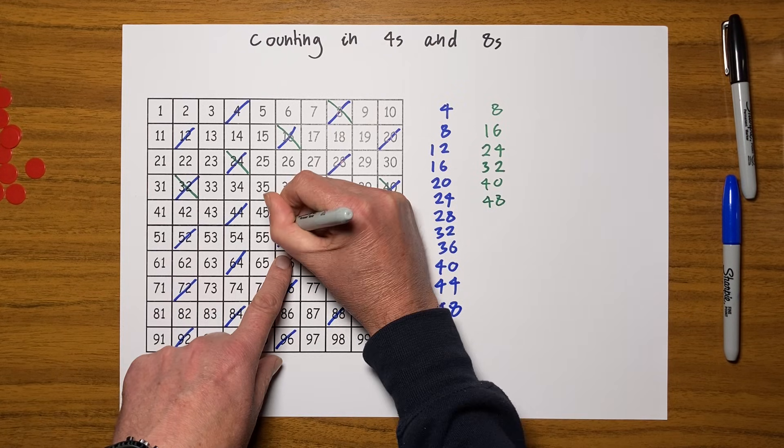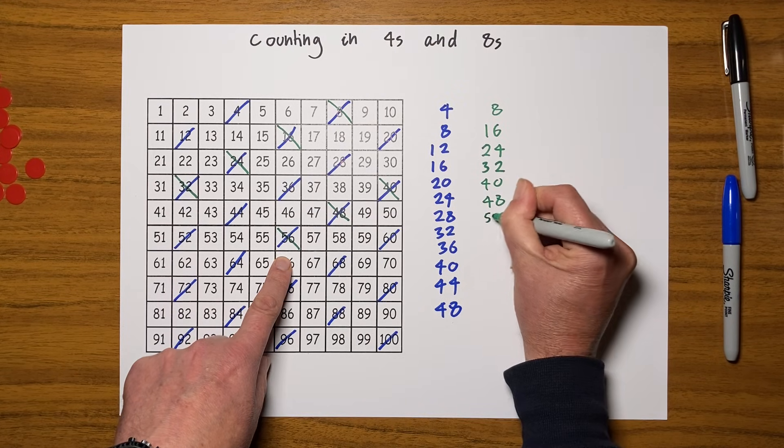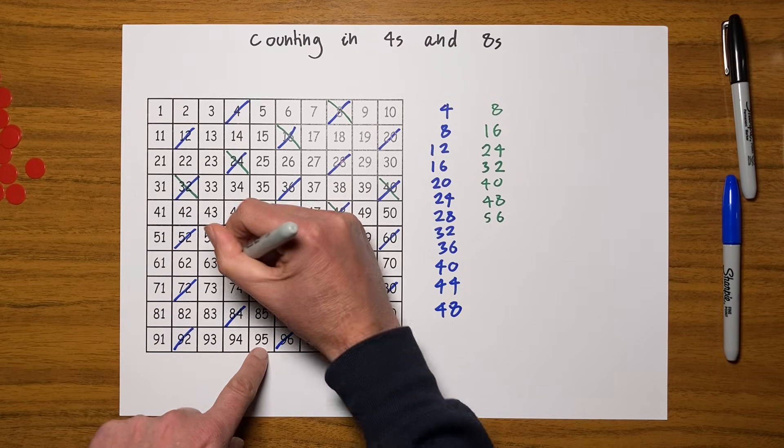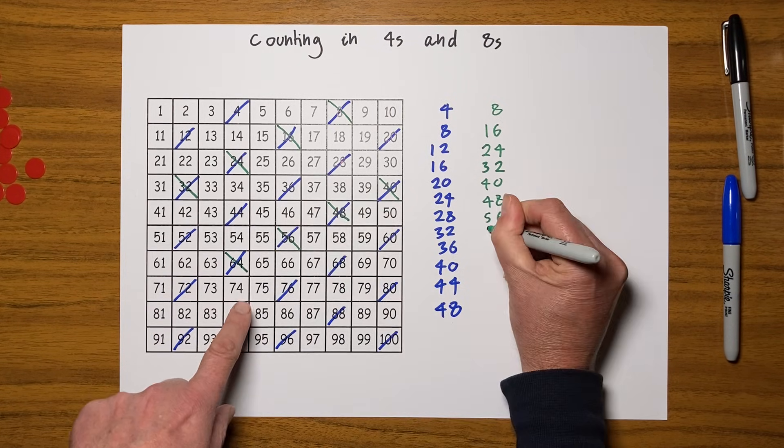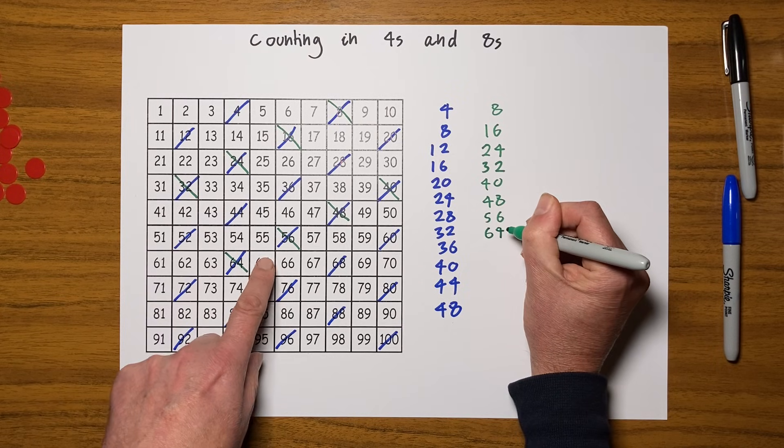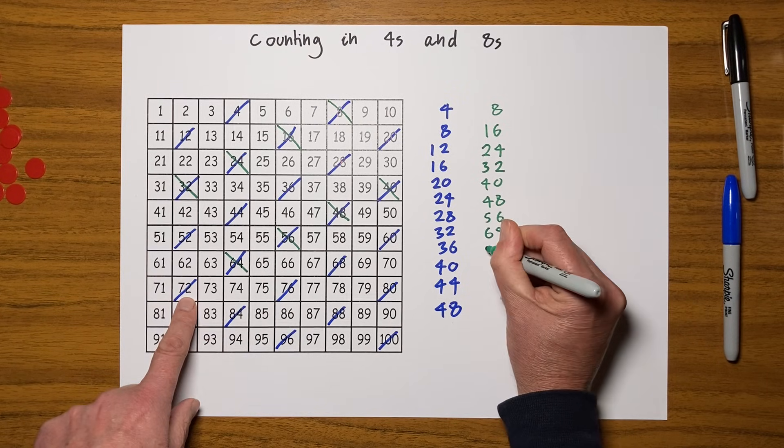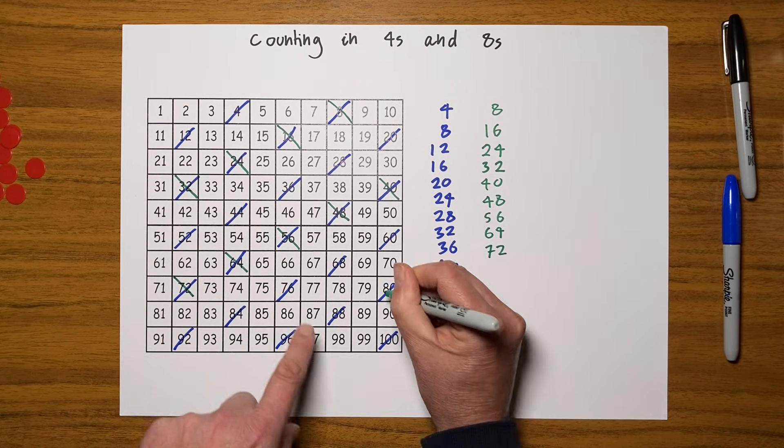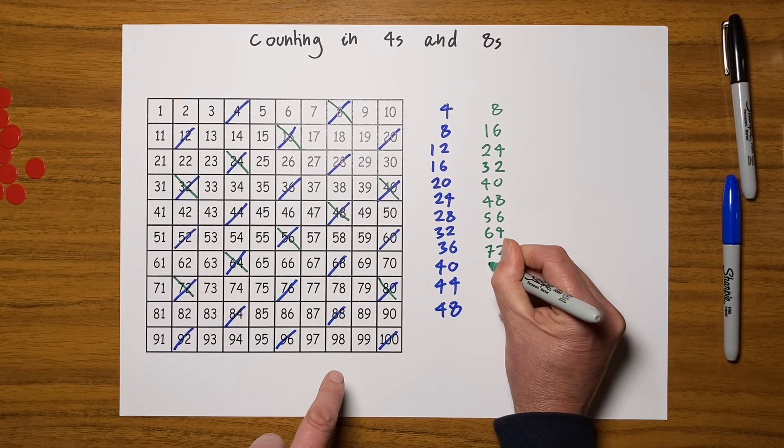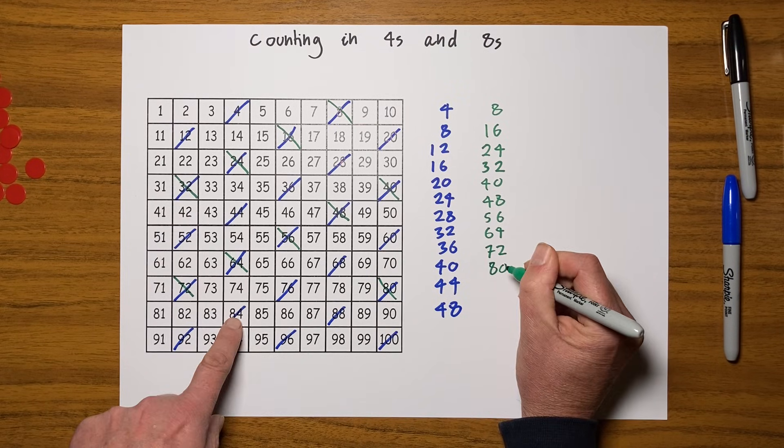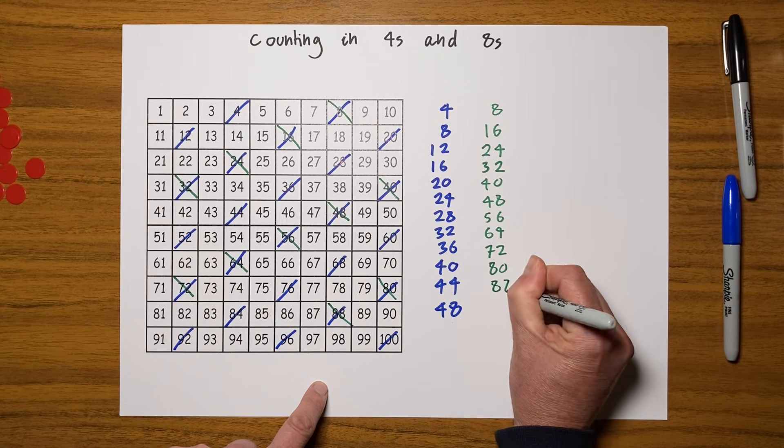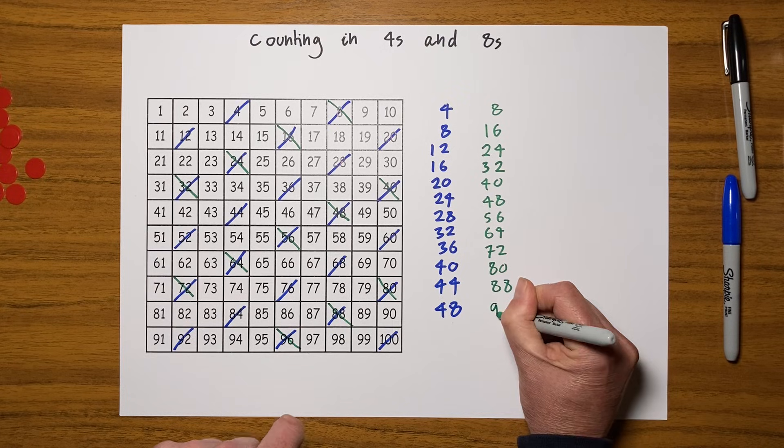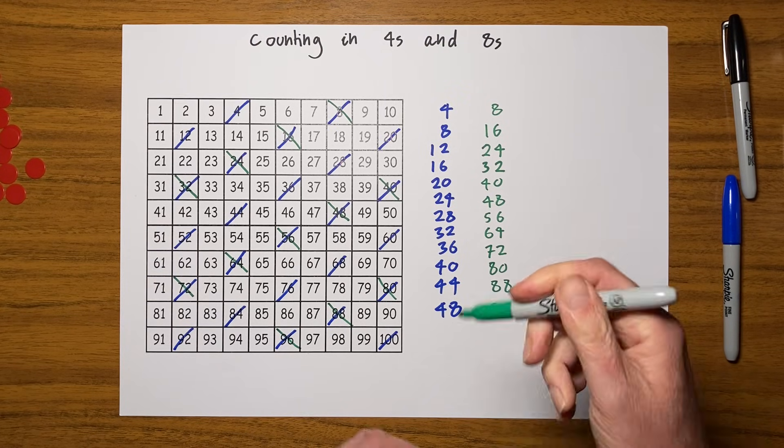Forty-eight. Miss one, mark it. Fifty-six. Let's count: one, two, three, four, five, six, seven, eight. Sixty-four. One, two, three, four, five, six, seven, eight. Seventy-two. Or I could miss it—I didn't mark that one. Miss it and mark it: eighty. Miss it and mark it: eighty-eight. Miss it and mark it: ninety-six.